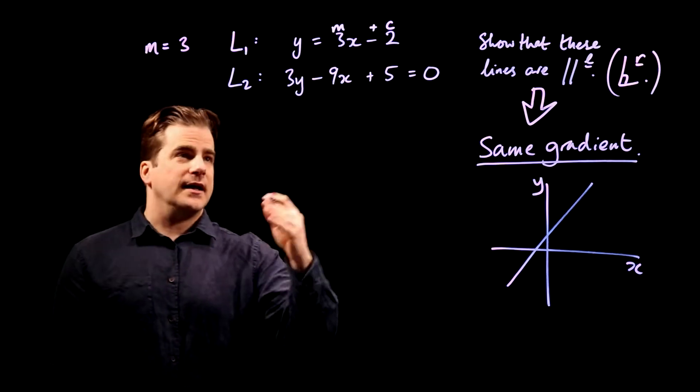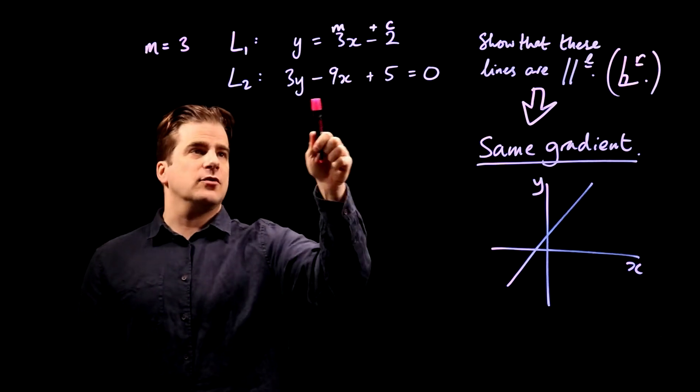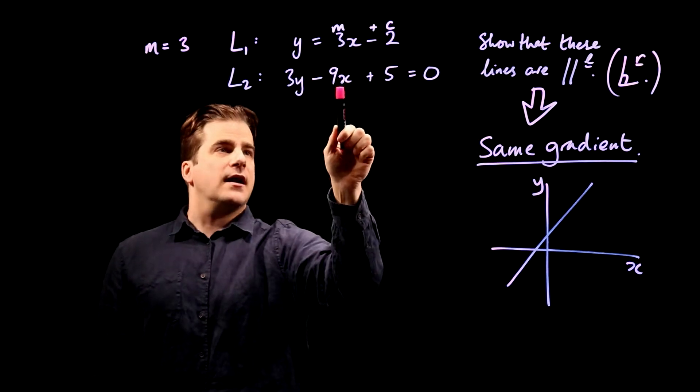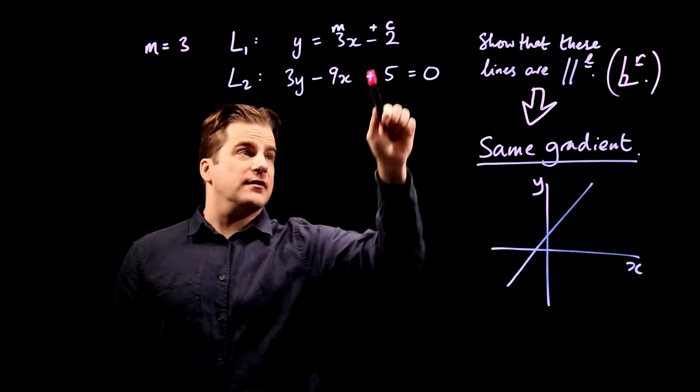So y equals mx plus c, we want y on one side and everything else on the other, so we need to take the minus 9x and the 5 onto that side.